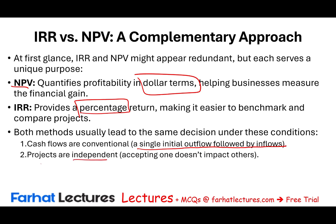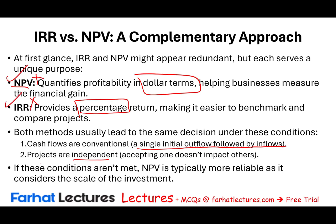If projects are independent and cash flows conventional, IRR says yes when NPV says yes, and IRR says no when NPV says no. Under those conditions they give the same answer. If these conditions are not met, NPV is typically more reliable because it accounts for the scale and size of the investment, and you would default to NPV.